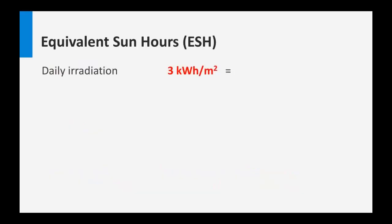There were also some discussions on equivalent sun hours. Let's consider the situation that we have a daily irradiation of 3 kilowatt hours per square meter. This means that per day we have a total energy of 3 kilowatt hours of sunlight incident on 1 square meter. We can express this in power times time: at standard test conditions, that is 1 kilowatt per square meter times 3 hours. So to have this daily irradiation under standard test conditions, we have 3 hours of standard test conditions incident on a surface — this is equal to 3 equivalent sun hours.